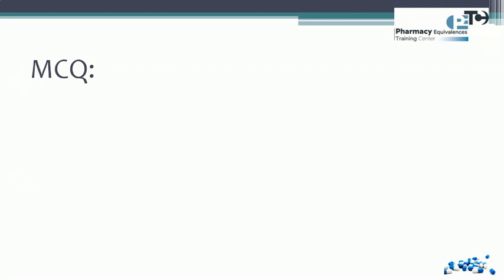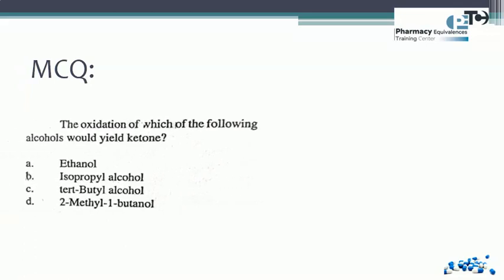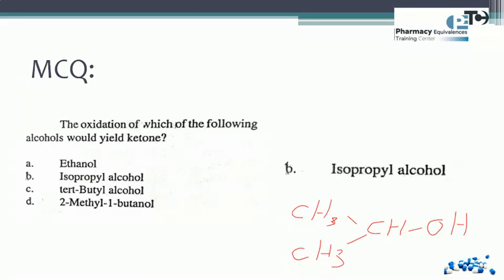Now we will look at some multiple choice questions. Question 1: the oxidation of which of the following alcohols would yield a ketone? We know that ketones are formed from the oxidation of secondary alcohols, so we need to identify the secondary alcohol among the choices. Ethanol is a primary alcohol. Isopropyl alcohol, when drawn out structurally, is a secondary alcohol — so it is the correct answer. Isopropyl alcohol can be oxidized to a ketone.